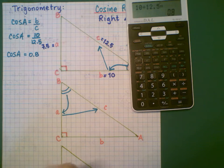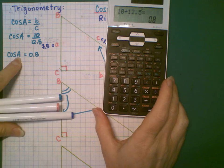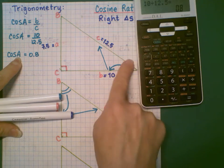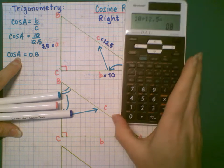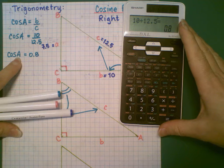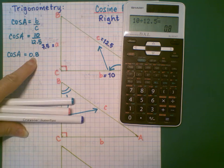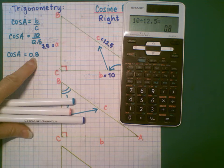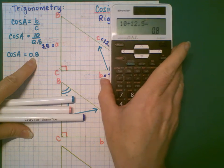At this point, this is where I have to use the calculator. In order to get the angle size, the size of angle A in degrees, I need the calculator to retrieve from a table that's in its memory, the value for which angle will generate a cosine of 0.8. So there's literally a table of values that has been programmed into the memory of this calculator.